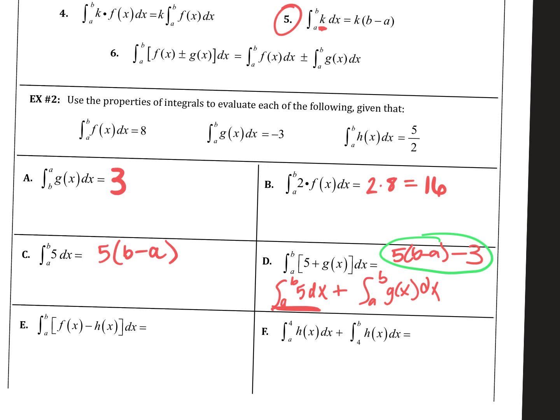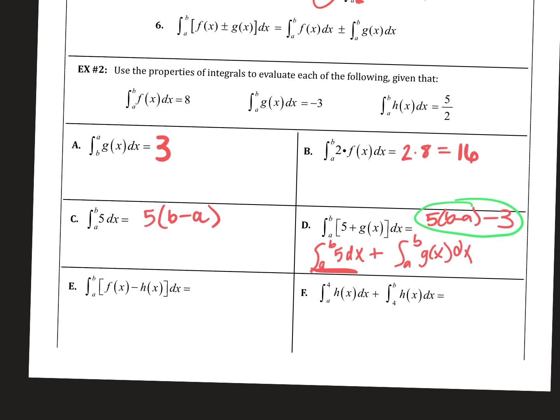A dx is always there. It's just part of it. It just means that you're doing it with respect to x, basically. But it should be in final answers and stuff? Not in final answers. But any time you're writing an integral, it should always be at the end. Alright. So then, on E here.